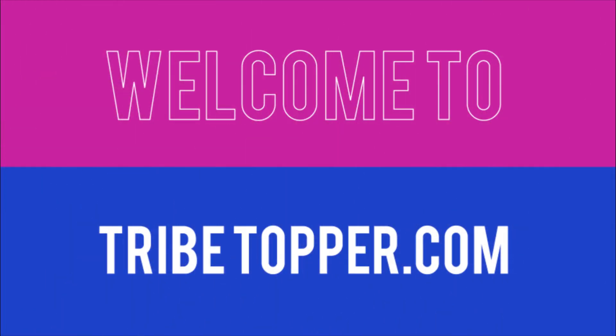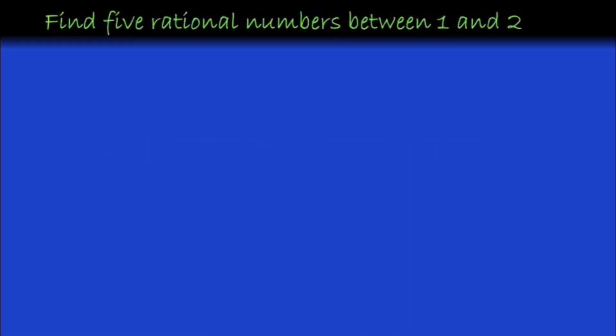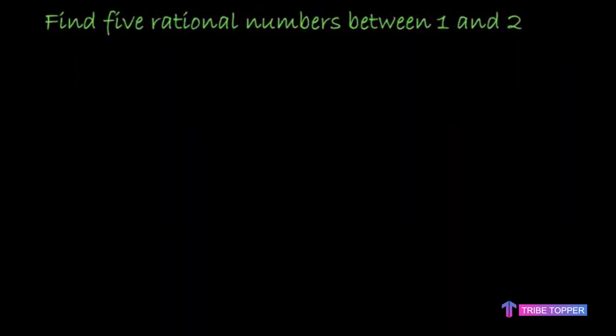Hello and welcome to Tribetopper.com. So far we have learned about rational numbers and irrational numbers, how to identify them. Now in this module we are going to learn about how to find rational and irrational numbers between any two given numbers. There are many many rational numbers between any two given numbers, so let's see how to find those numbers with the help of this example.